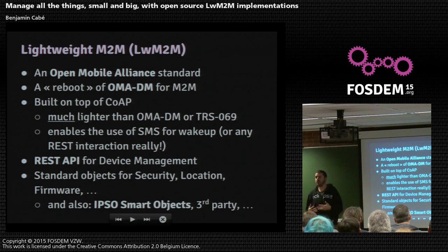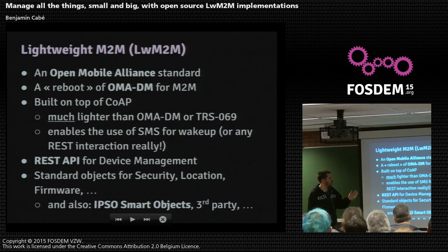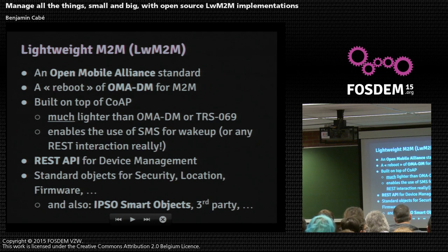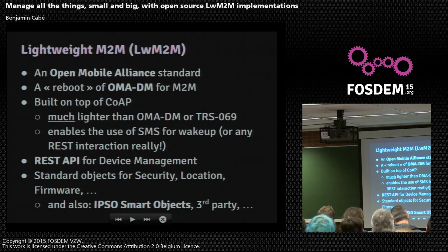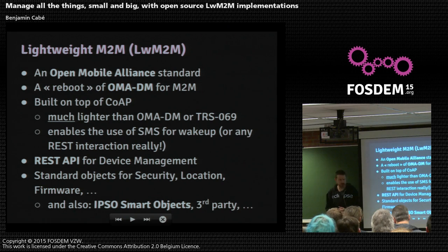CoAP is REST on top of UDP — a very lightweight mechanism for doing REST. Lightweight M2M standardizes a set of resources, similar to HTTP resources, that you can GET, PUT, and POST to update or query their values. It standardizes a set of objects with well-known names and attributes for accessing things like battery level, number of SMSs sent and received. There are also other initiatives, like IPSO, standardizing resources for acceleration, temperature, and humidity.